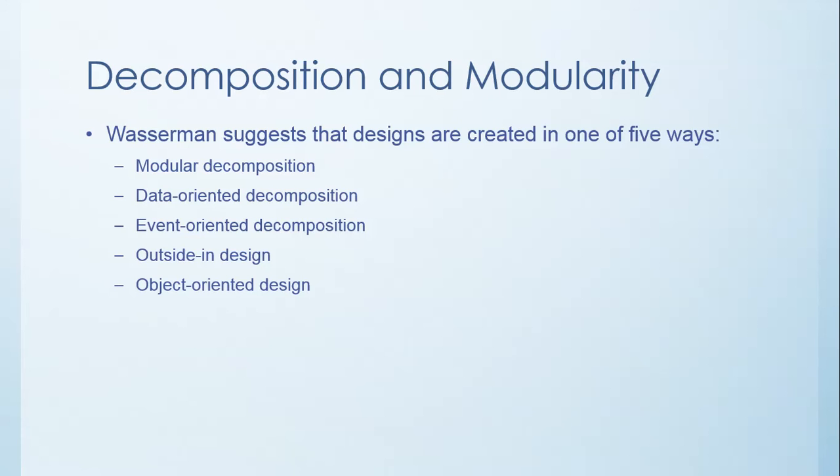In order to actually break it down to the level that we can actually move on to the implementation step, these five ways are: you have the modular decomposition, data-oriented decomposition, event-oriented decomposition, outside-in design, and object-oriented design.